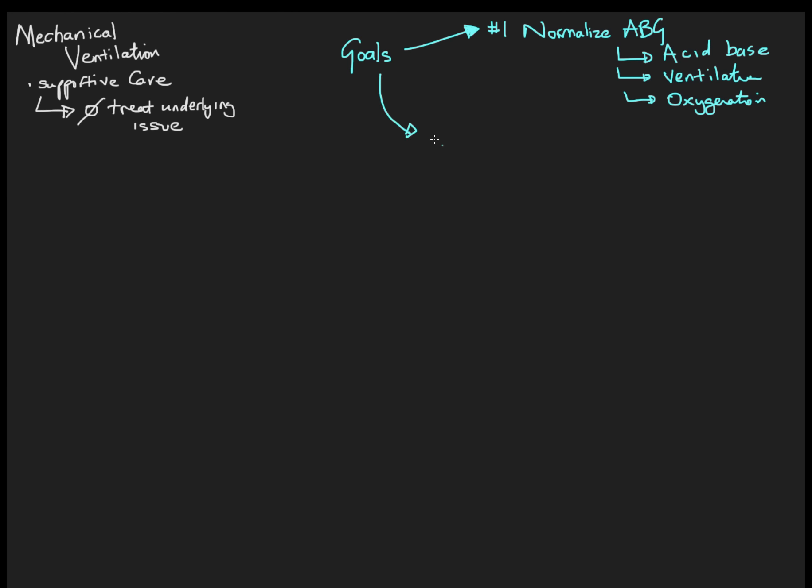And the other major goal is we want to remove or reduce the patient's work of breathing. So let's just put reduce work of breathing, WOB. So we want to unload the respiratory muscles, give them a break as it were. And we want to do that in a synchronized manner as we can.